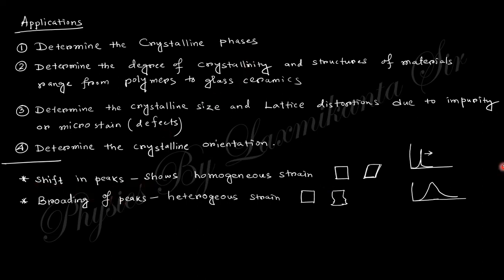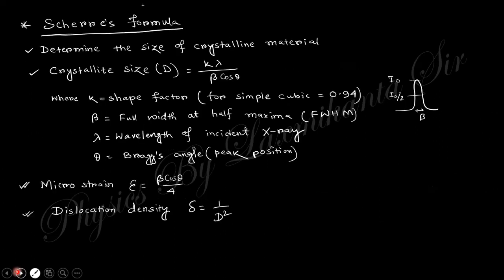From XRD, you can obtain the crystalline phase, determine the degree of crystallinity, and the plane structure. If a peak is shifted, there is a homogeneous strain. If a peak is broadened, that indicates heterogeneous strain. From the Scherrer formula applied to a single peak, you can obtain the grain size — the crystalline size of the material. The formula is D = Kλ / (β cos θ), where K is a constant approximately 0.9, λ is the wavelength of the incident X-ray, and β is the full width at half maximum (FWHM) of the peak.